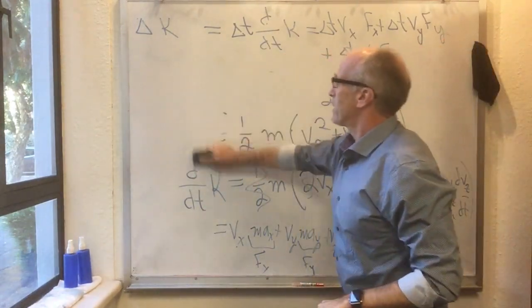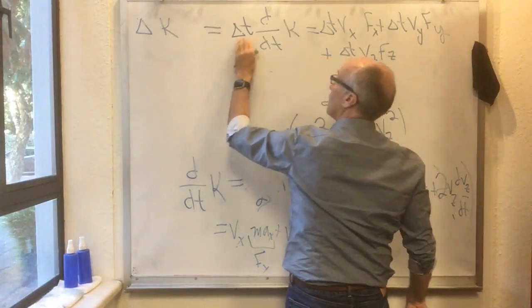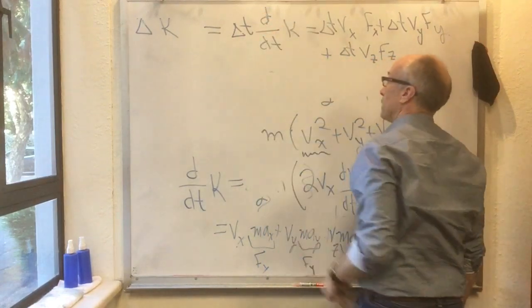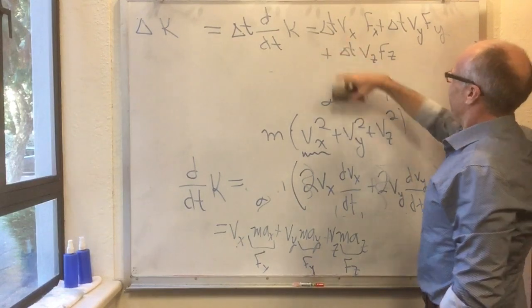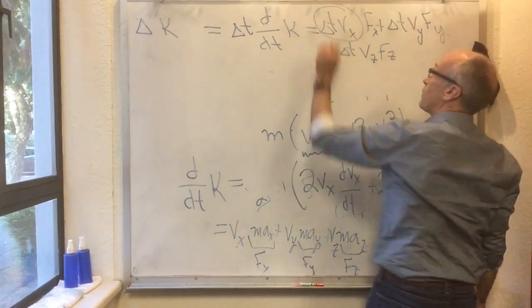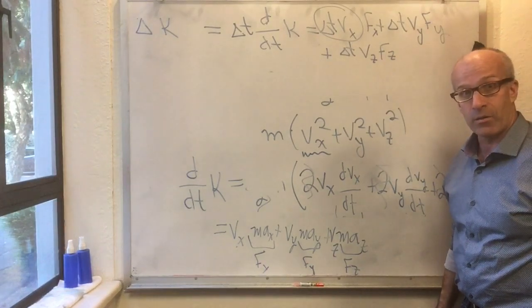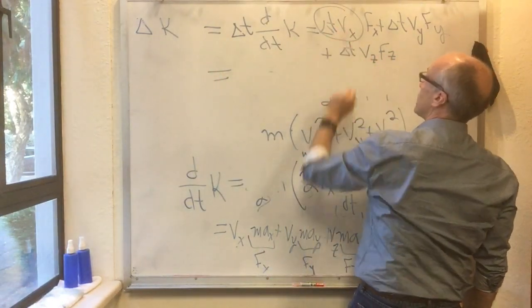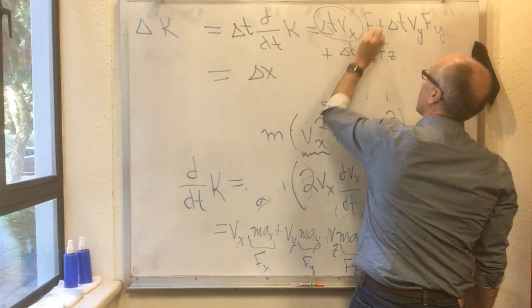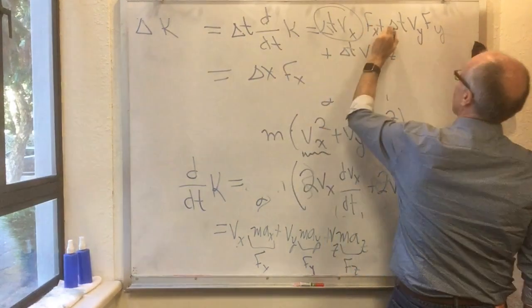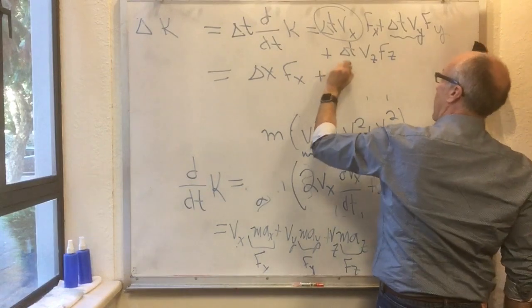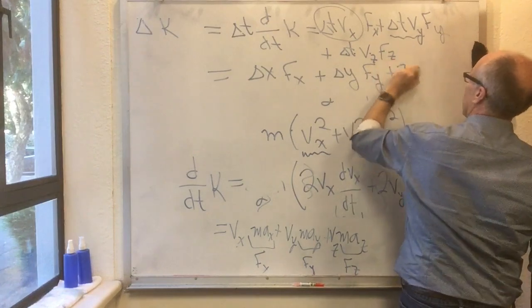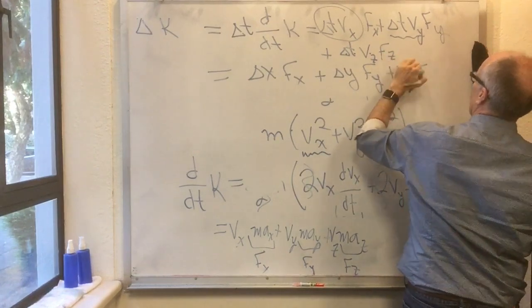I have the change in k in a little time delta t. So delta k is delta t times dk/dt. Over here on the right-hand side, delta t times Vx—that's how far the particle has moved in the x direction—that's equal to delta x. We still have fx going for the ride. Delta t times Vy is delta y times fy, and delta t times Vz is delta z times fz.